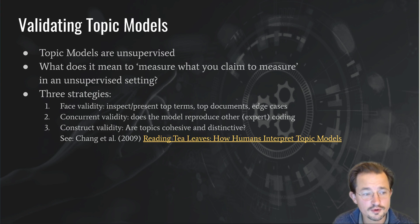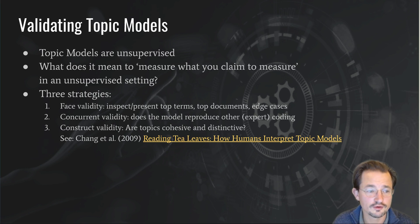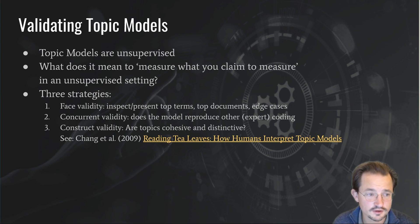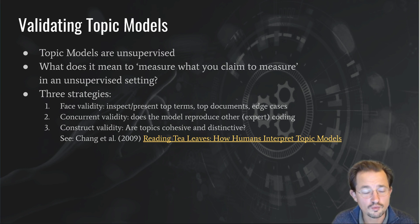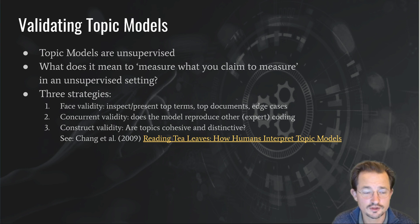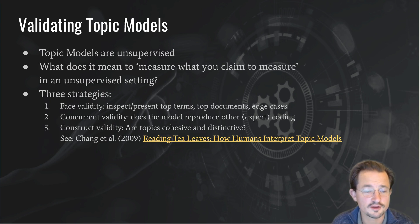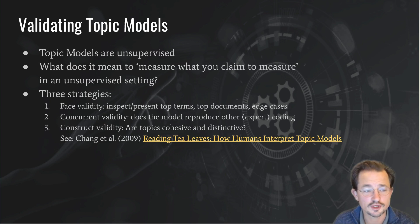However, topic models by their very nature are unsupervised. You don't tell them what a topic is or what you're after — you just ask the computer to find patterns. So what does validity mean in that setting? What does it mean to measure what you claim to measure, if you have an unsupervised setting where you don't actually ask the computer to measure something — you just ask it to find patterns?